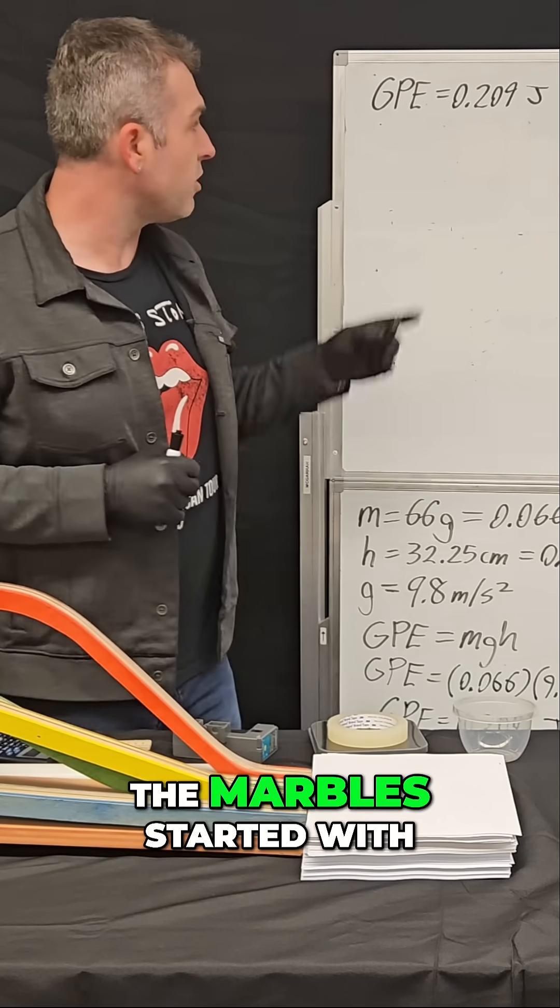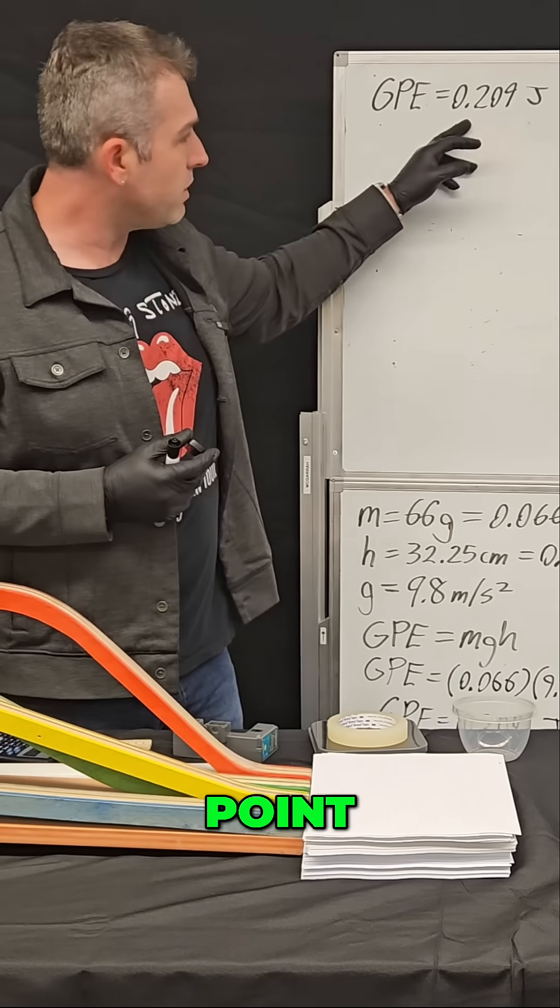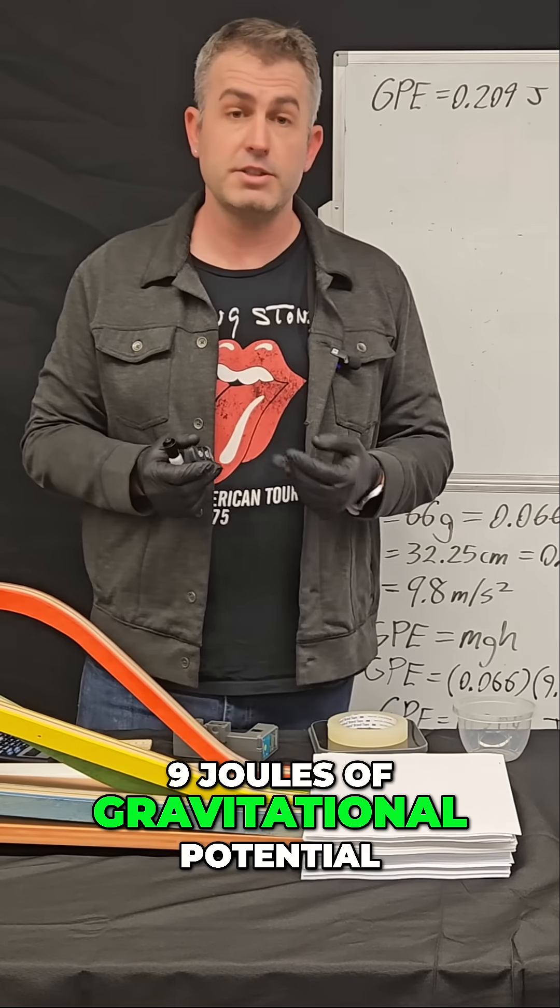Okay, so we know all the marbles started with the same amount of potential energy at the start, and that was 0.209 joules of gravitational potential.